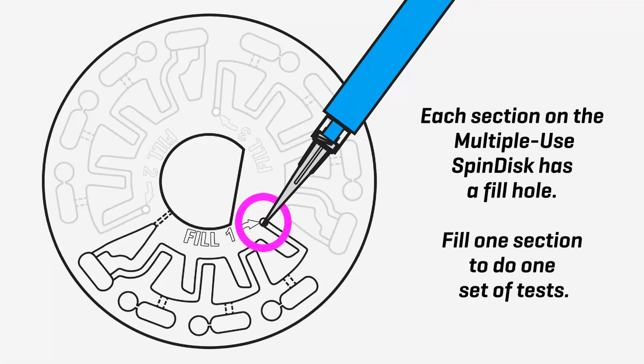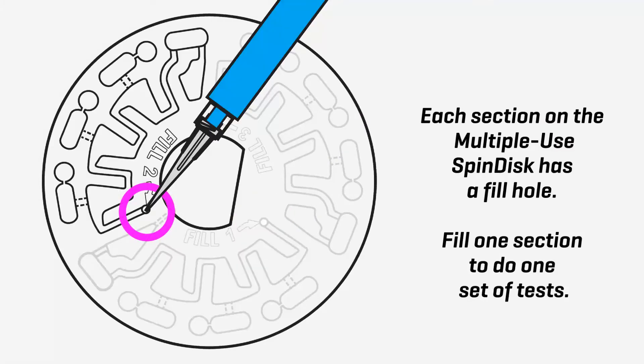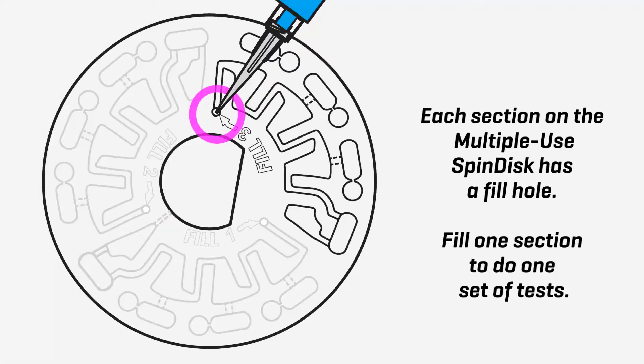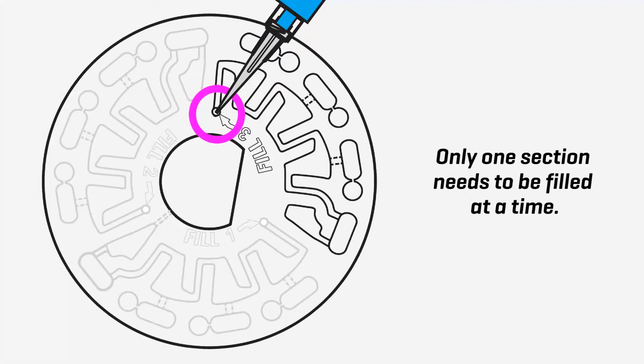Each section on the multiple-use spin disc has a fill hole. Fill one section to do one set of tests. Only one section needs to be filled at a time.